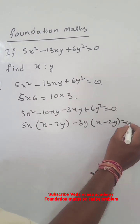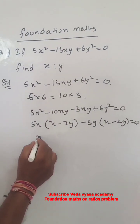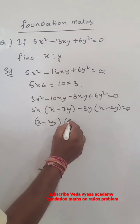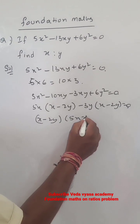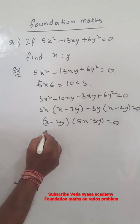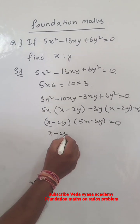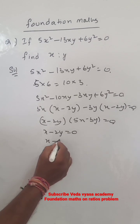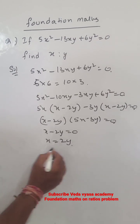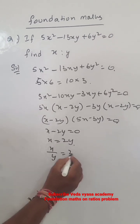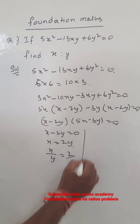x minus 2y equal to 0. So x minus 2y into 5x minus 3y equal to 0. From the first factor, x is equal to 2y, therefore x by y is equal to 2 by 1.